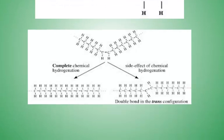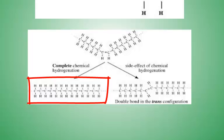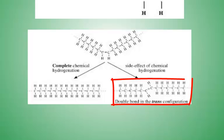Many foods contain hydrogenated oils. In this figure, we see part of a cis monounsaturated fat which has gone through hydrogenation. Complete hydrogenation produces a completely saturated fat. But as part of the consequence of processing unsaturated fats, trans fats are produced.